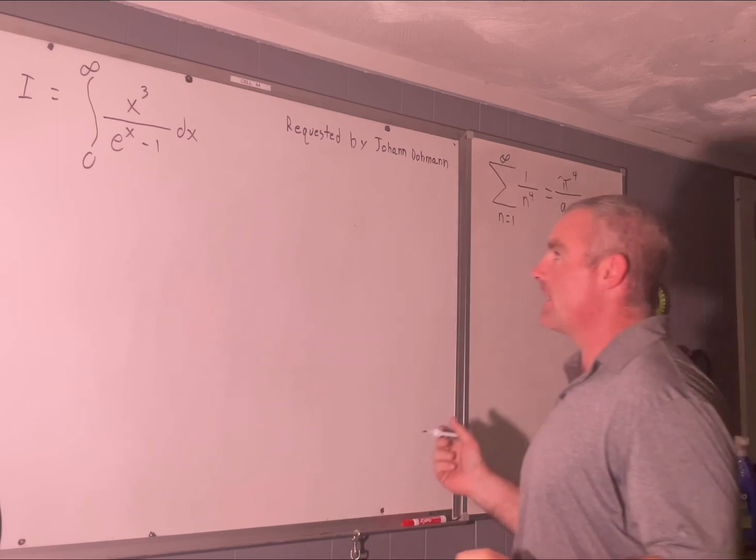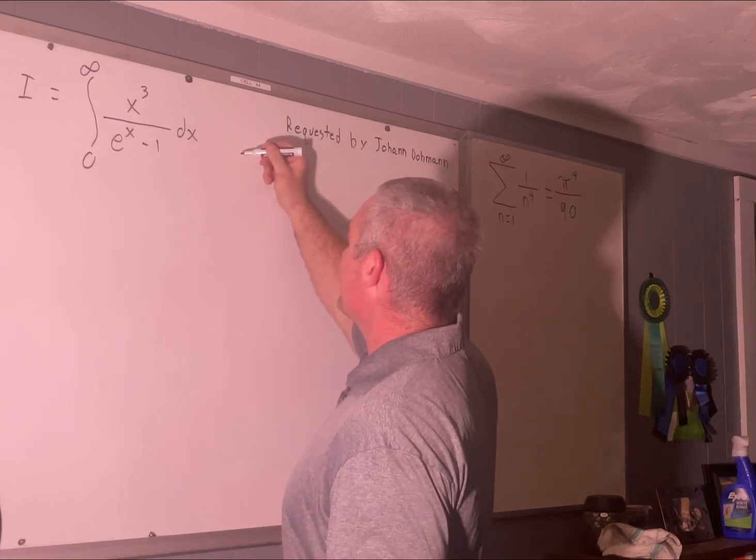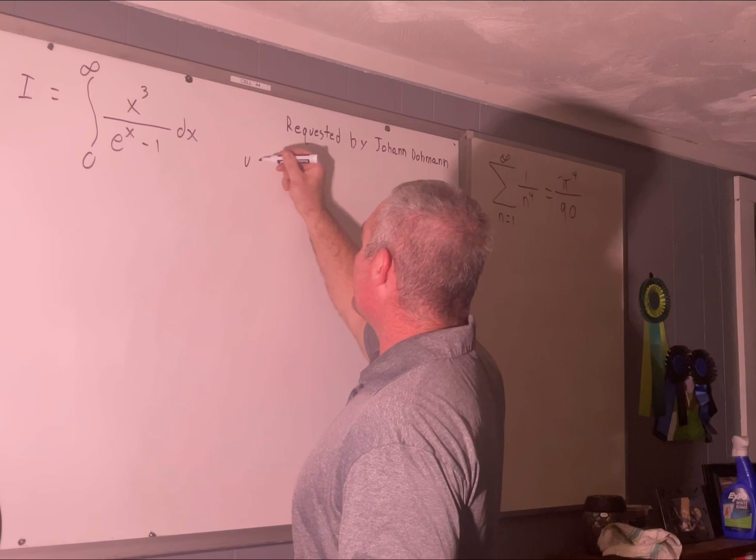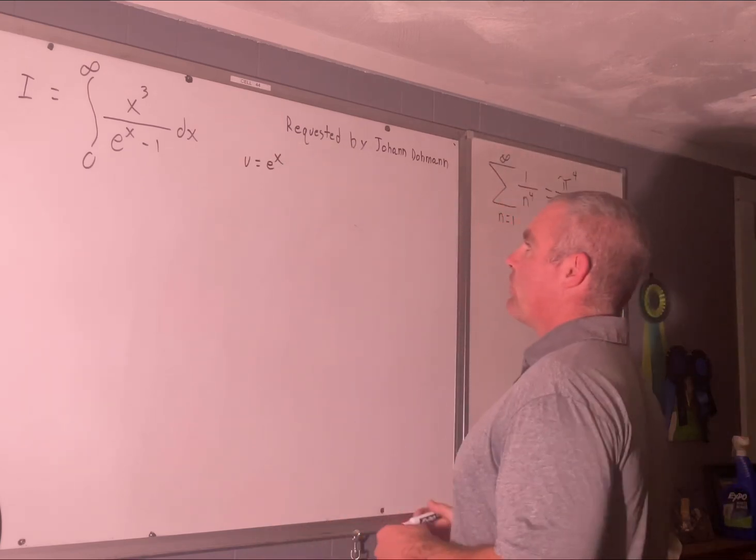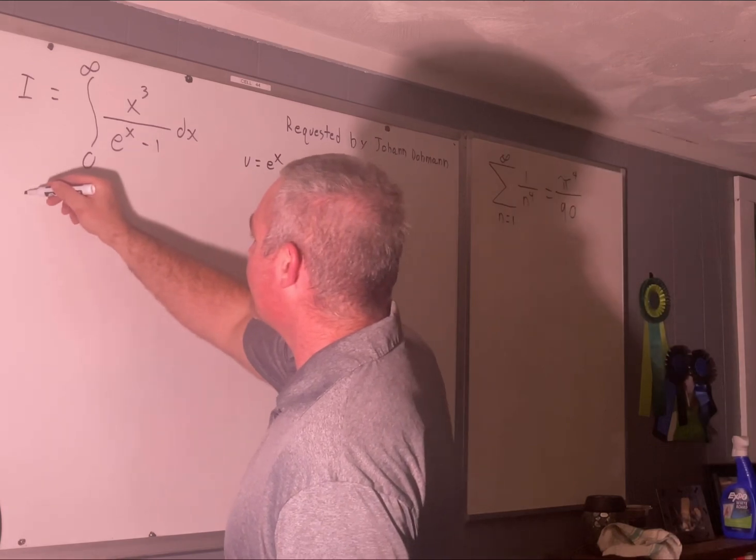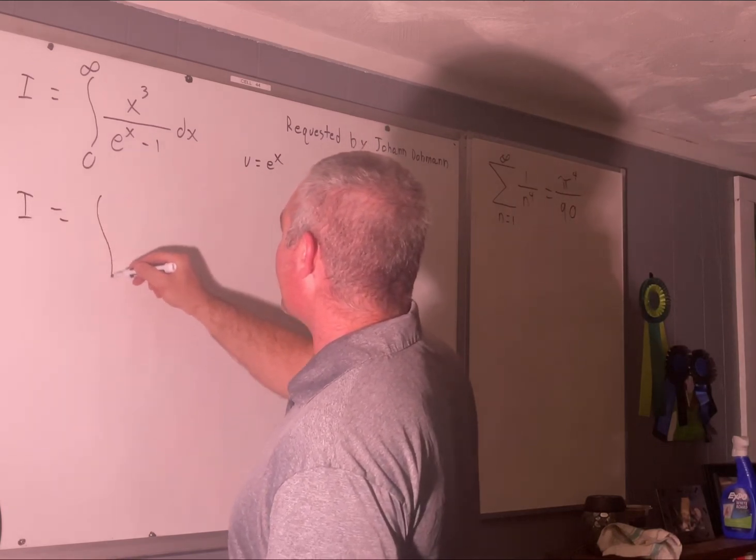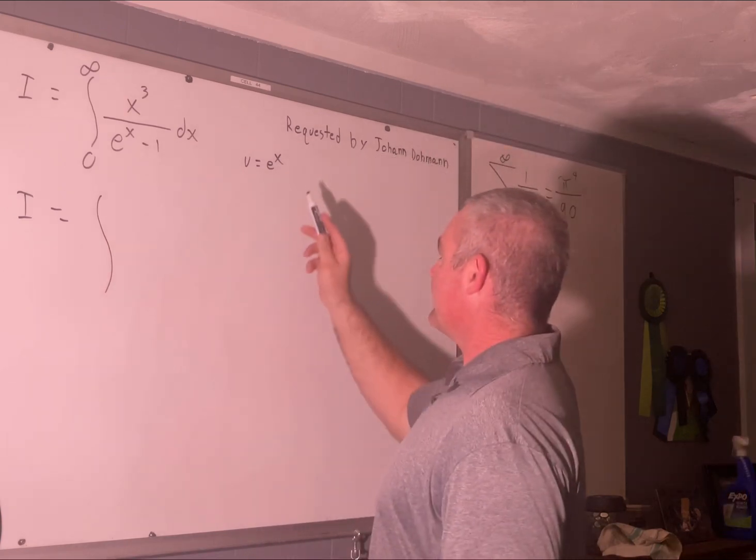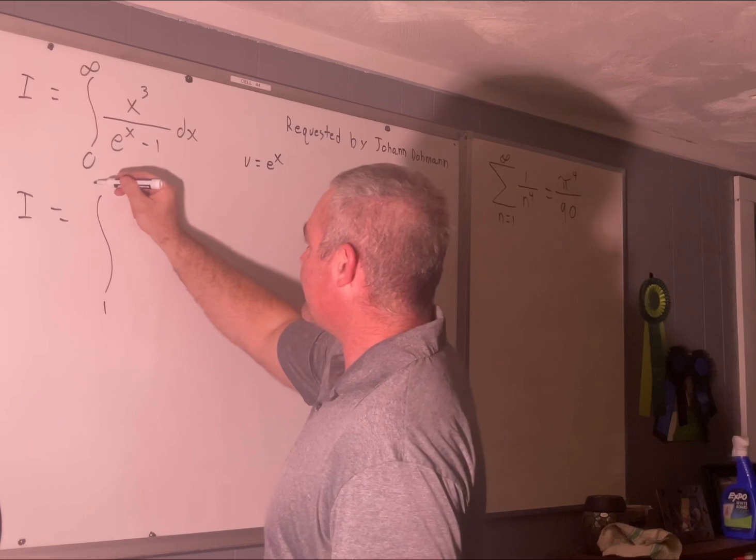Let's just go ahead and make the substitution that, let's let u equal e to the x. All right, and what happens if we do that? Well, that's going to give us the integral. E to the zero is one and e to the infinity is infinity.